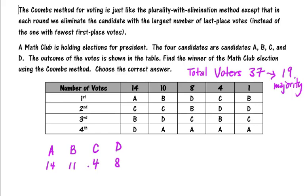Now none of these are 19 therefore we do not have a majority and we're going to have to go through the Coombs process. So again the Coombs process is very close to plurality with elimination except for it goes in the opposite direction. We're going to delete the candidate with the largest number of last place votes. So let's go ahead and get started.